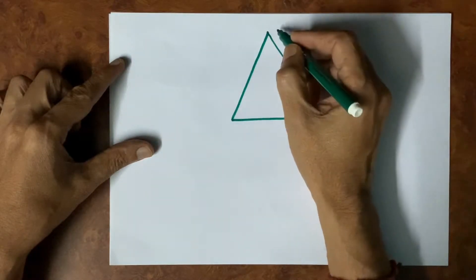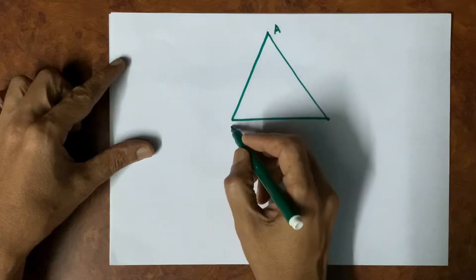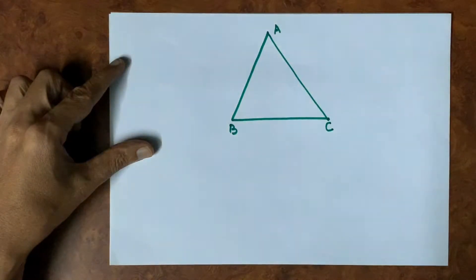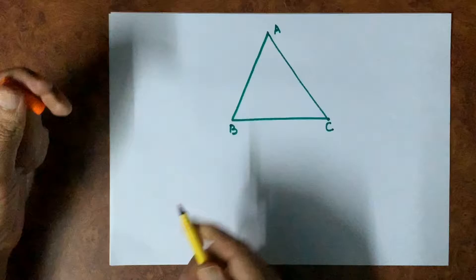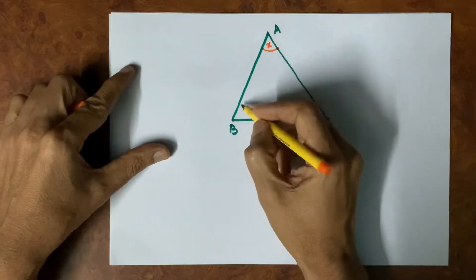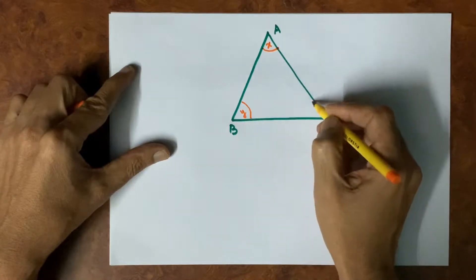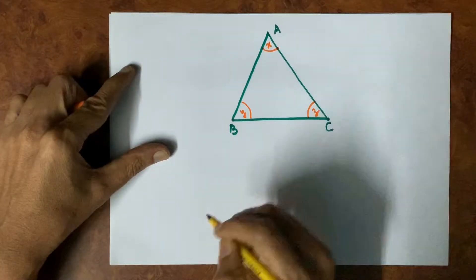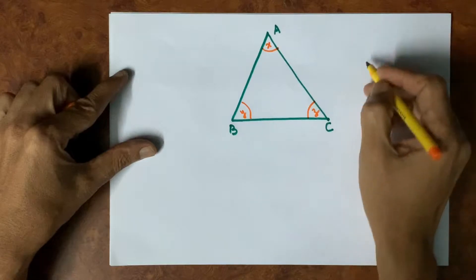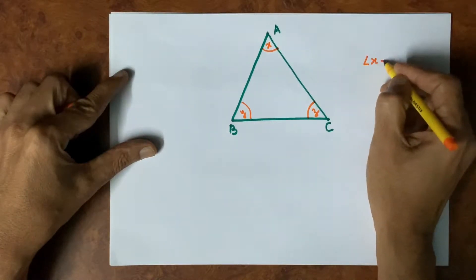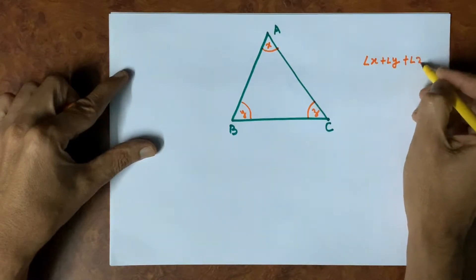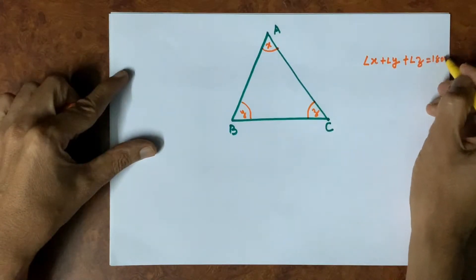Let us have triangle A, B, C and let us name the three angles: angle X, angle Y, and angle Z. So we have to prove that angle X plus angle Y plus angle Z is equal to 180 degrees.